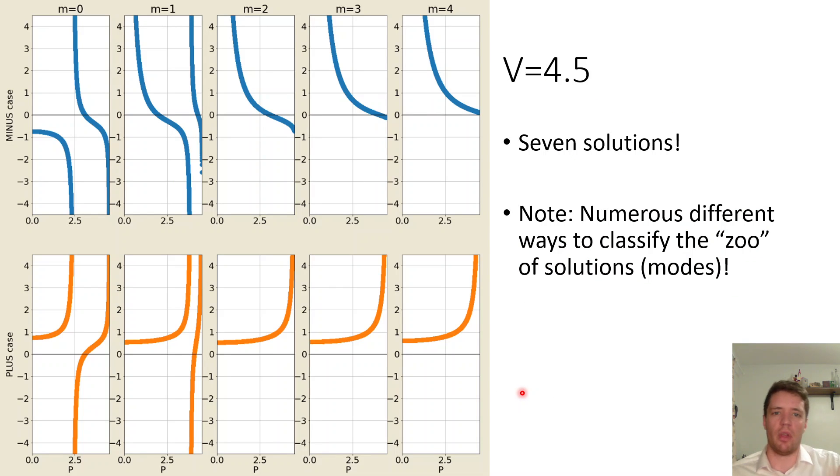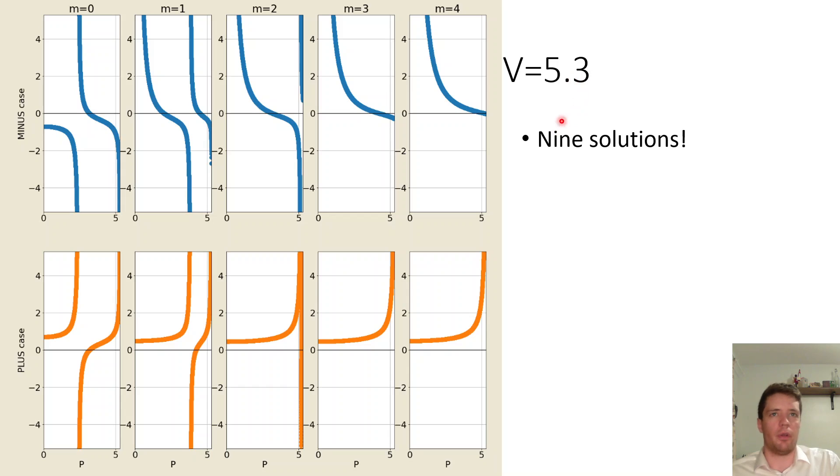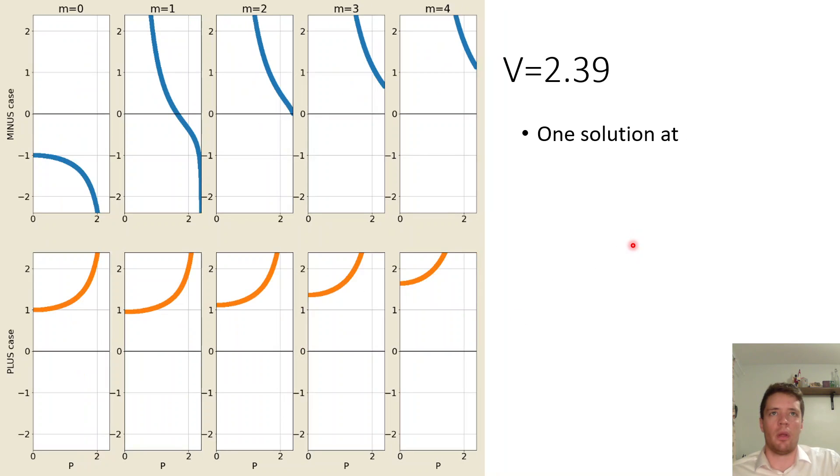And so if you exploit some of the properties of Bessel functions you can change it into these two equations here for the minus and plus cases respectively. So let's actually try and solve these equations here, I'm just going to do it graphically so I've chosen the value of v of 4.5 and we can see we get one two three four five six seven solutions. So note by the way that there's numerous different ways to classify and categorize these different modes, some classified by which ones have linear polarization and using different indices and such, don't worry too much about that now just be aware that some authors use different conventions here.